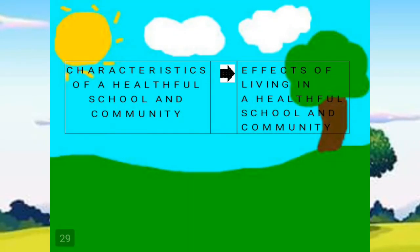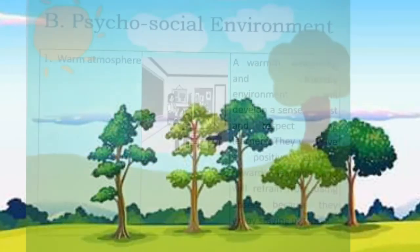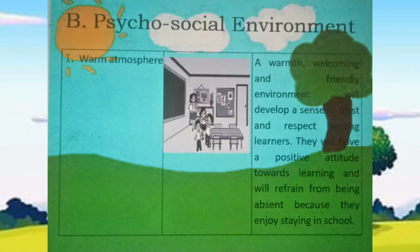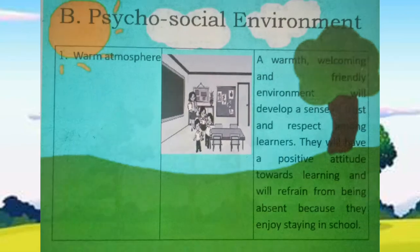Here are also the effects of living in a healthful school and community. For Column A are the characteristics, and Column B are the effects. Number 1: the characteristic under psychosocial environment is warm atmosphere. A warm, welcoming, and friendly environment will develop a sense of trust and respect among learners. They will have a positive attitude towards learning and will refrain from being absent because they enjoy staying in school.